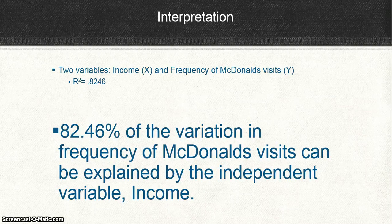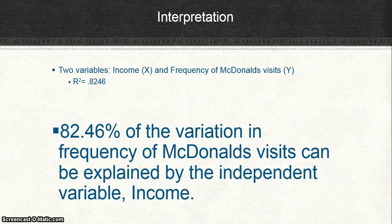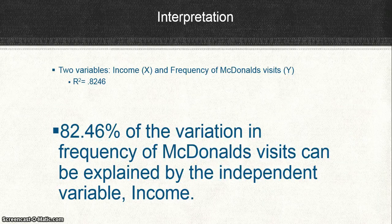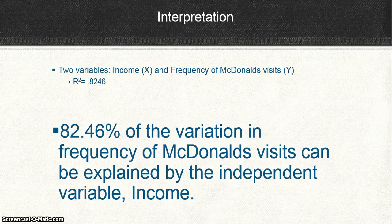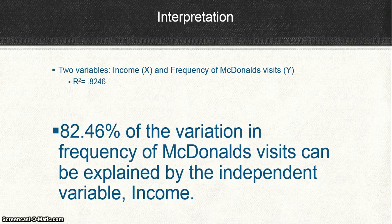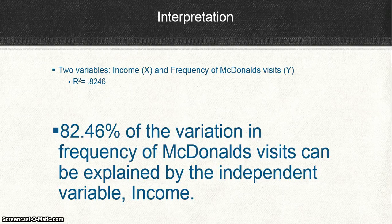You convert it to a percentage and say the following: 82.46% of the variation in frequency of McDonald's visits can be explained by the independent variable income. This standard format is all you need to know about how to interpret the coefficient of determination.